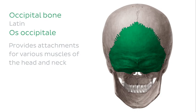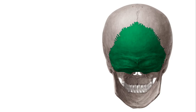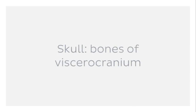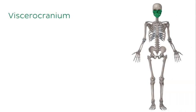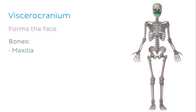Now that we've looked at some of the bones of the neurocranium, let's move on to the bones of the viscerocranium. The term viscerocranium simply refers to the bones that form the face. We're going to look at two bones of the viscerocranium: the maxilla or the upper jaw, and the mandible or the lower jaw.